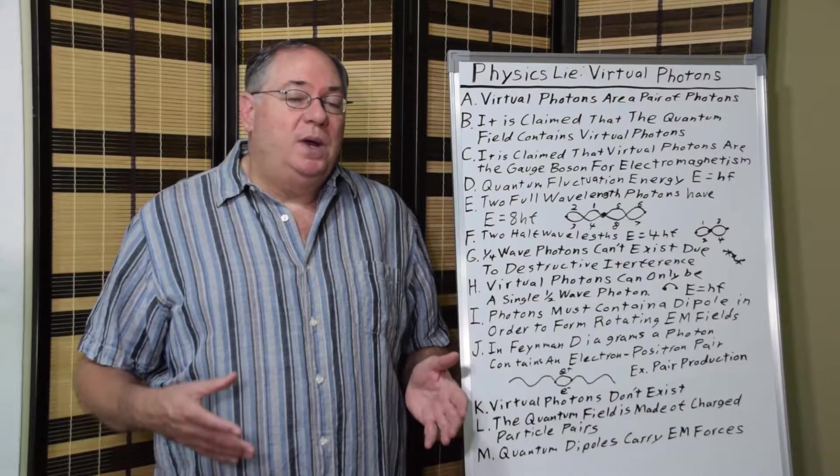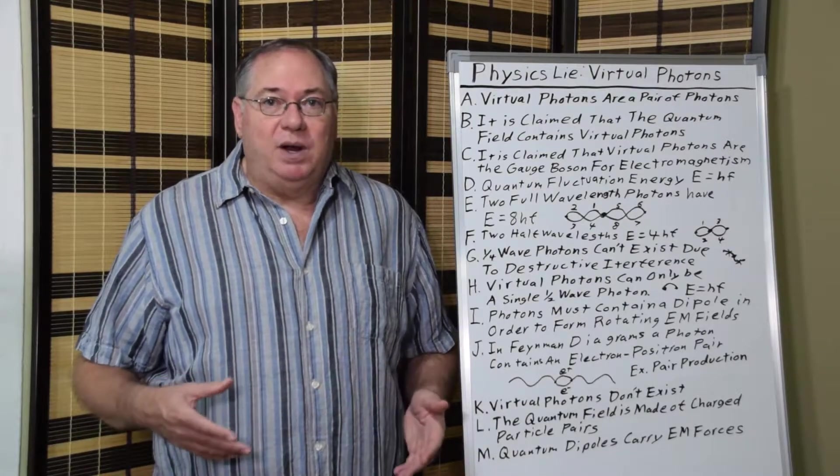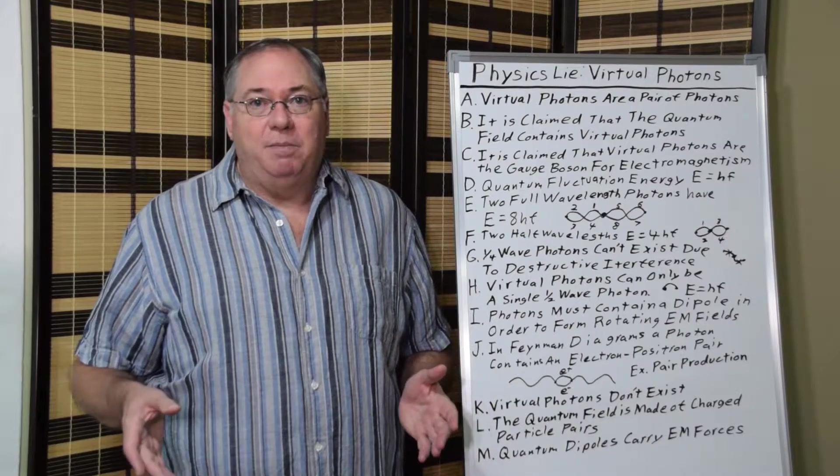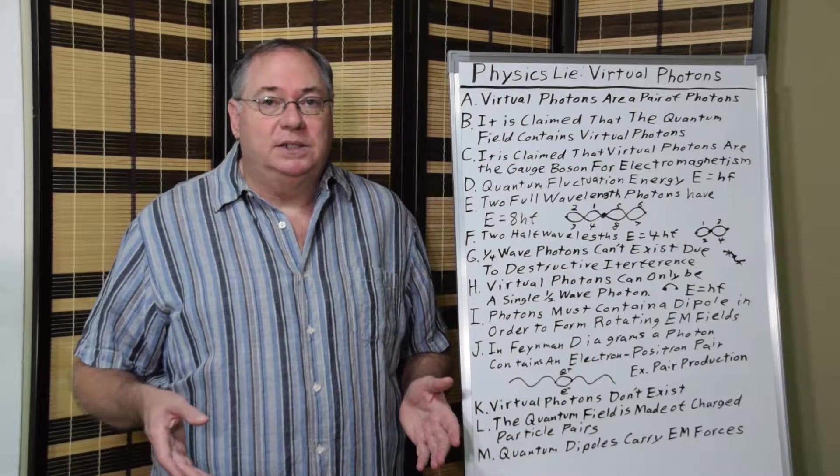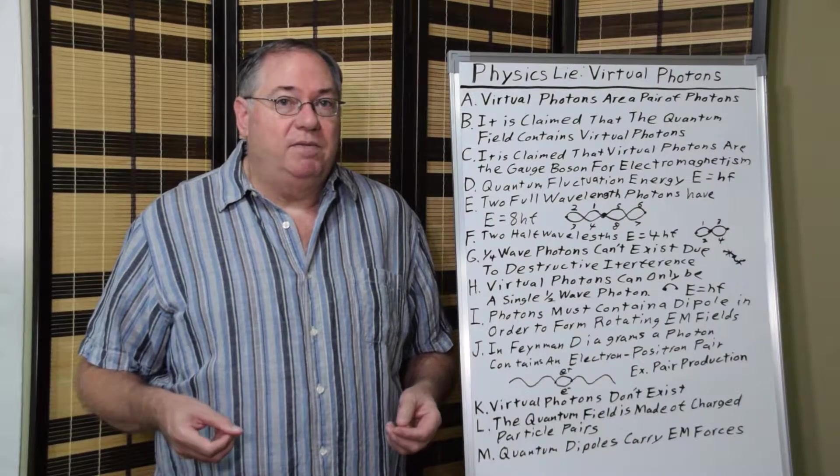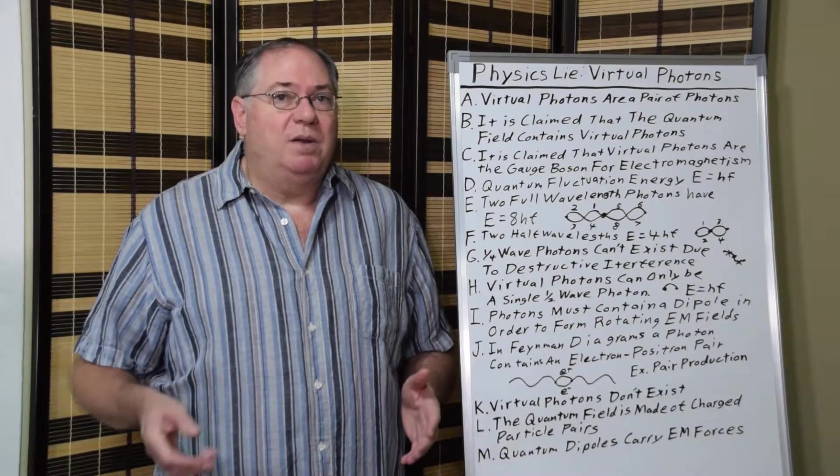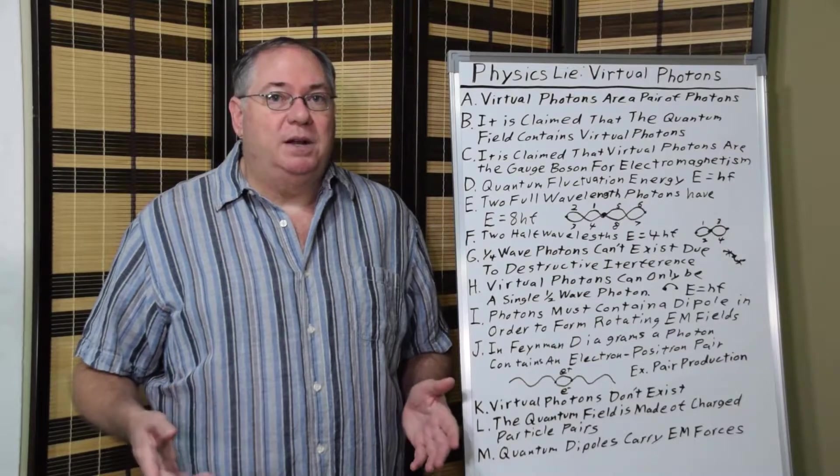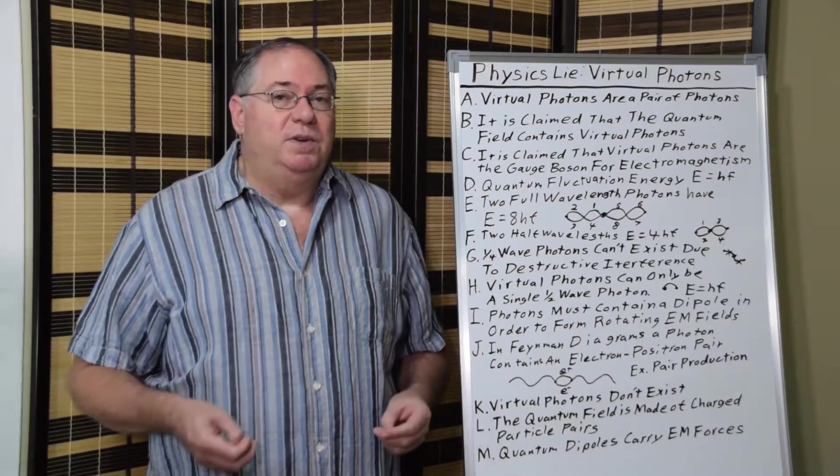In the early days of quantum field theory, when they were considering the particle pair model of quantum fluctuations, photons was the first thing they thought of. Much of quantum field theory developed with the photon pair model or the virtual photon model.